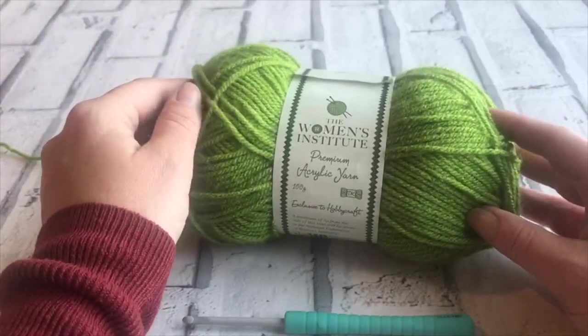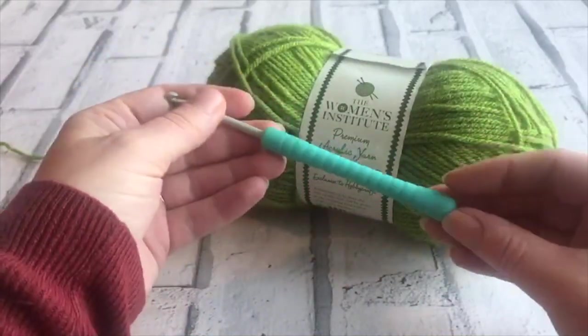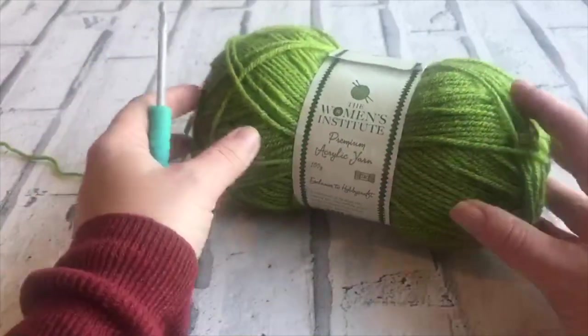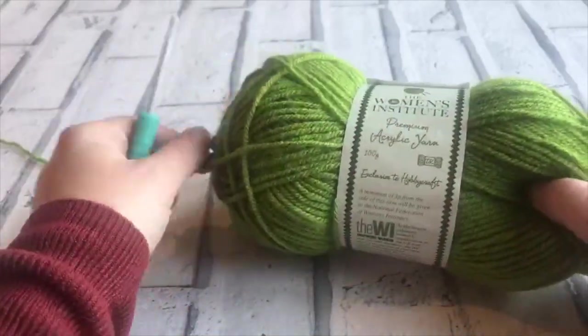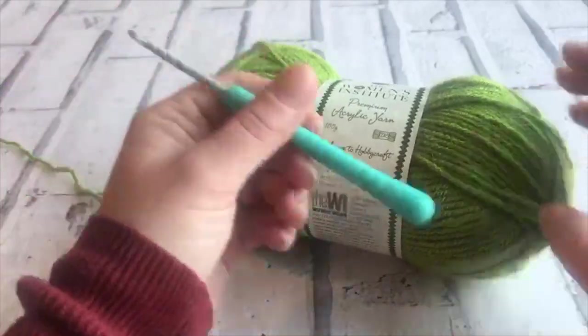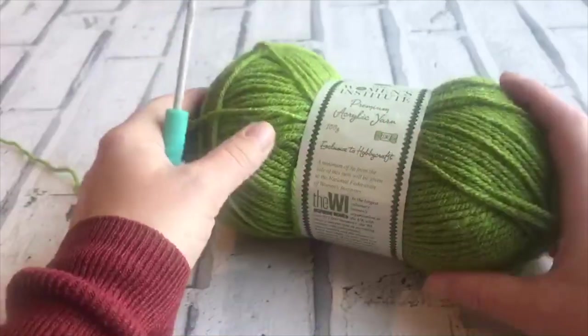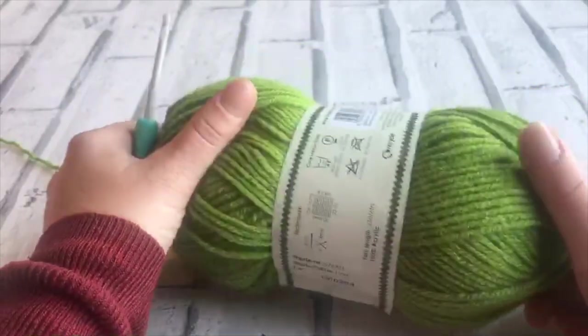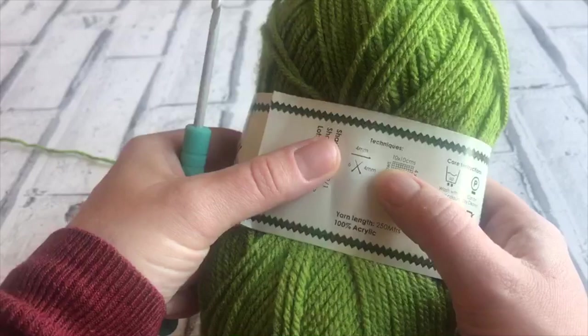So today we're going to be learning how to do a slip knot and make a chain to start any one of our crochet projects. What I'm using today is a double knit yarn, this one is from Women's Institute you can get at Hobbycraft. The recommended crochet hook size for this is a 4 millimeter hook. Whichever yarn you're using, just check the label and it will tell you exactly which size to use.